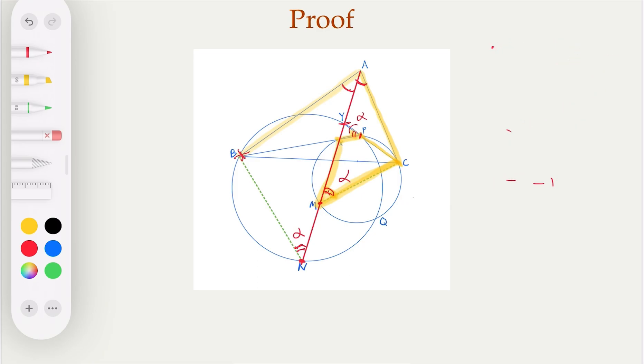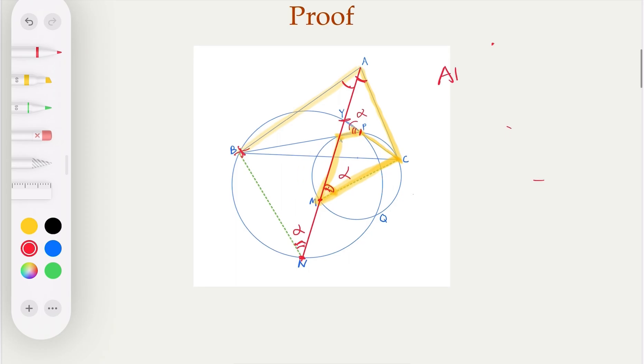So here is ABN, the big triangle here, is similar to ACM. So let's erase some of the markings here, and highlight it. It's a big triangle here. This is the one, and this is the other one. These two are similar.